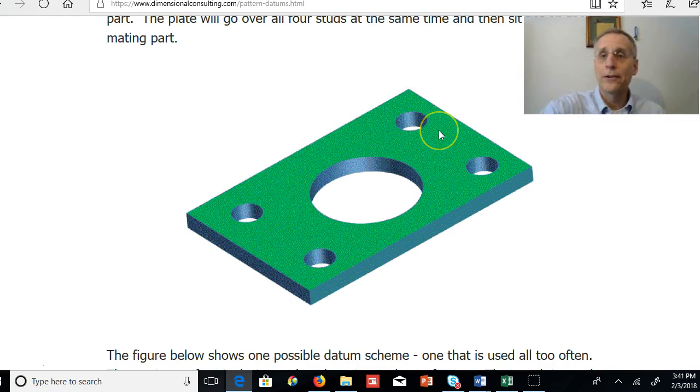These four clearance holes are going to maybe fit over some studs in an adjoining part, or they're going to be lined up with some threaded holes in an adjoining part. Bolts are going to go through and all we care about is assembly. If we cared about location, if location were critical, then we wouldn't use four clearance holes.